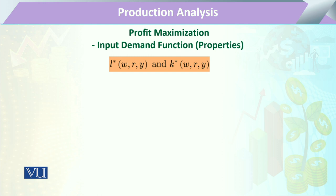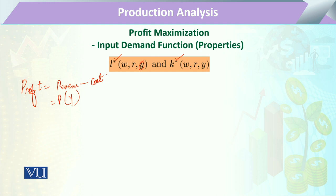In these two properties, we have the demand function of our inputs — labour and capital — and their demand functions depend upon their respective prices W and R, and the amount of output. For profit maximization, profit is equal to revenue minus cost. The revenue corresponds to the amount of output Y. An isoquant explains the amount of output produced by a firm using two factors of production, labour and capital.